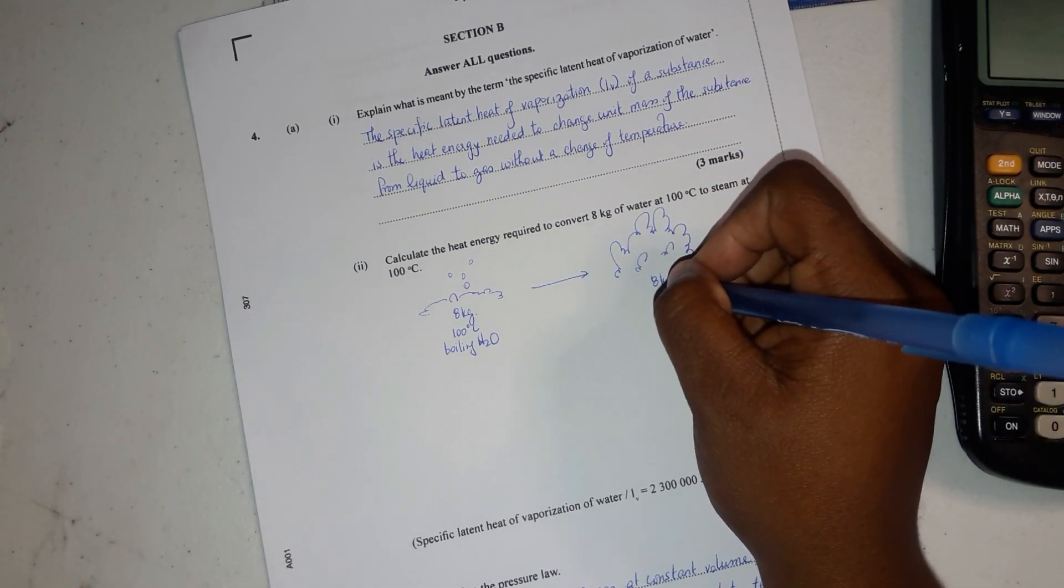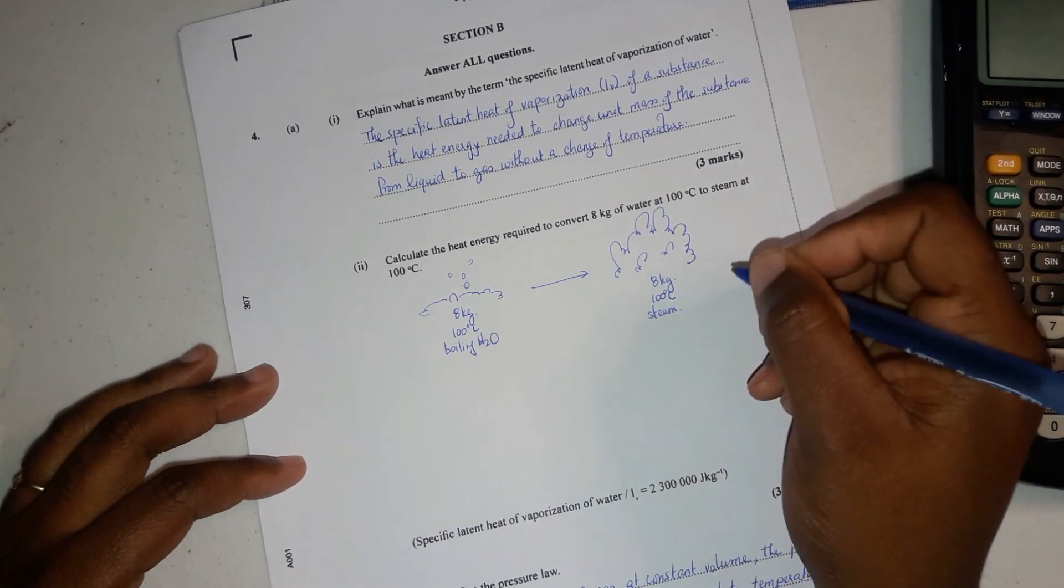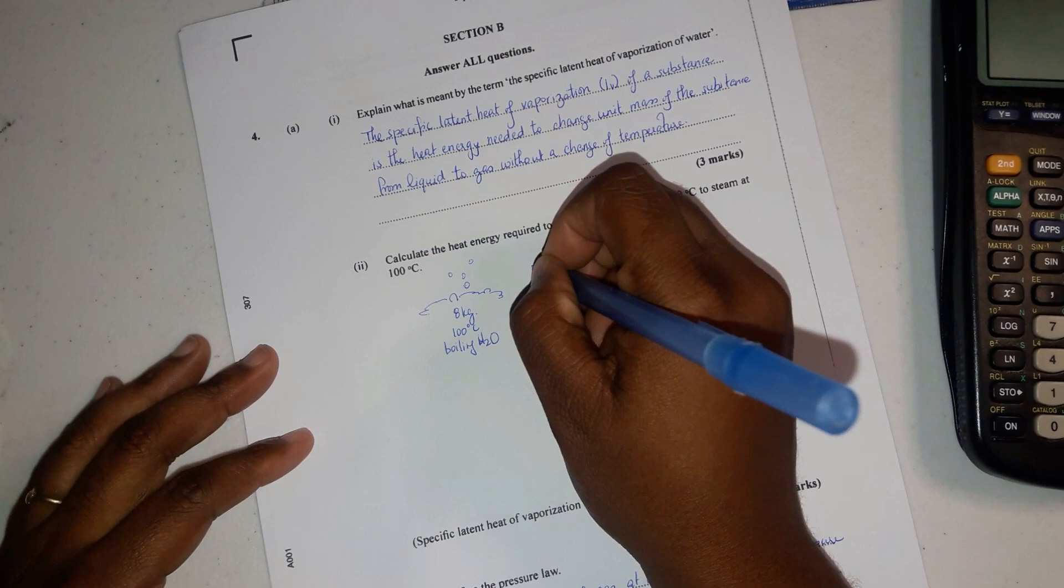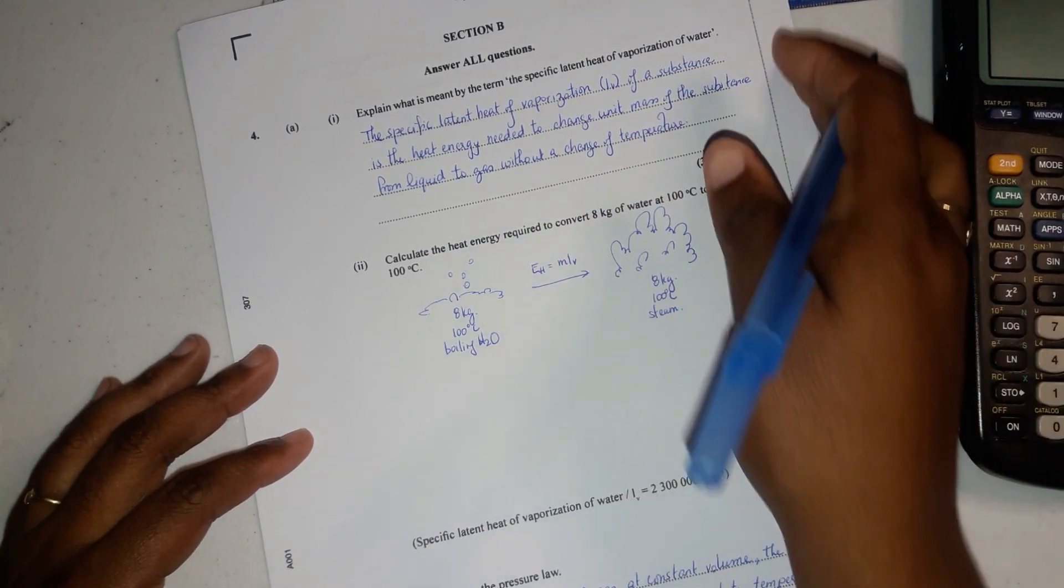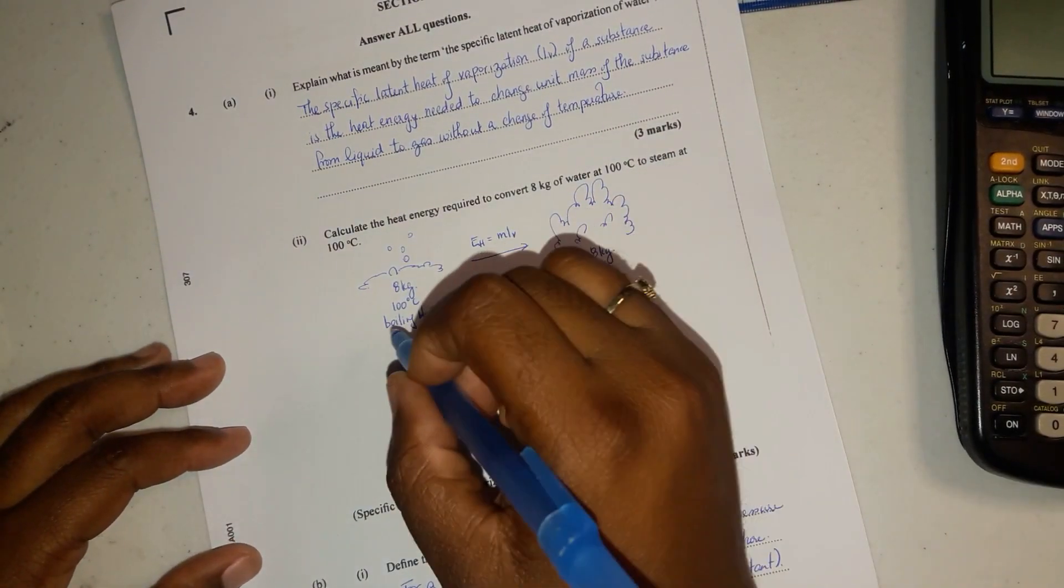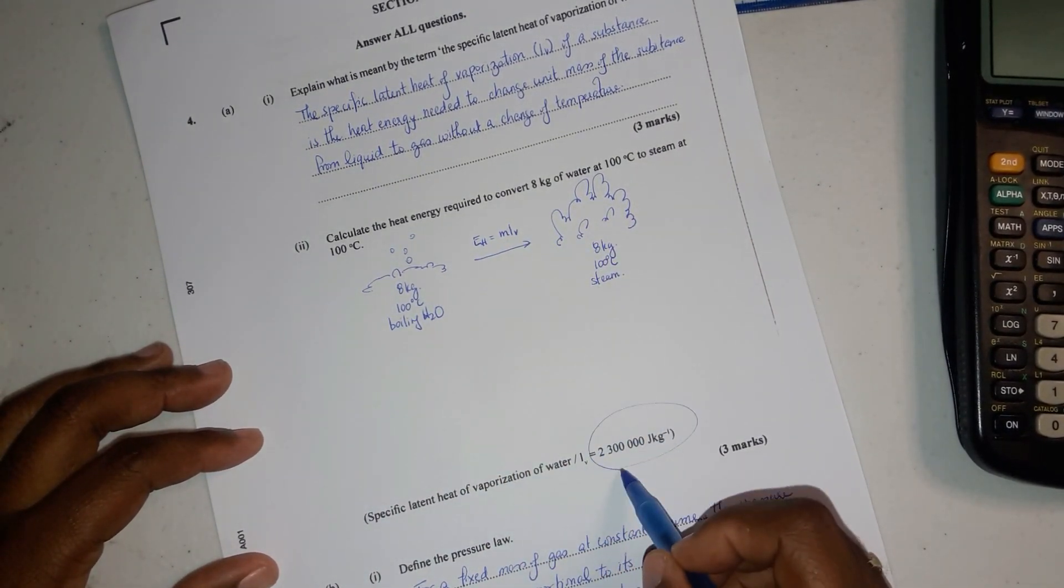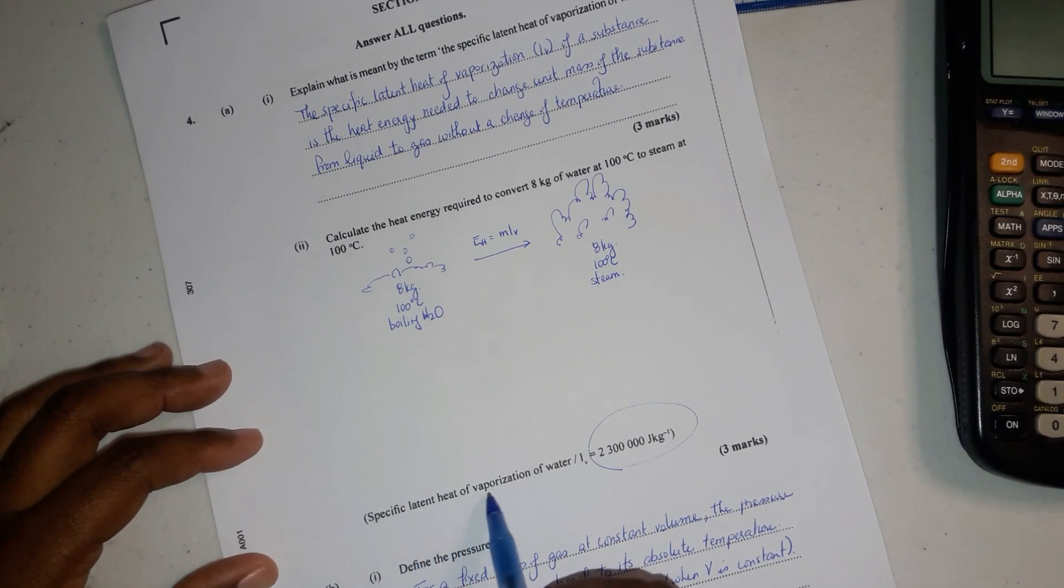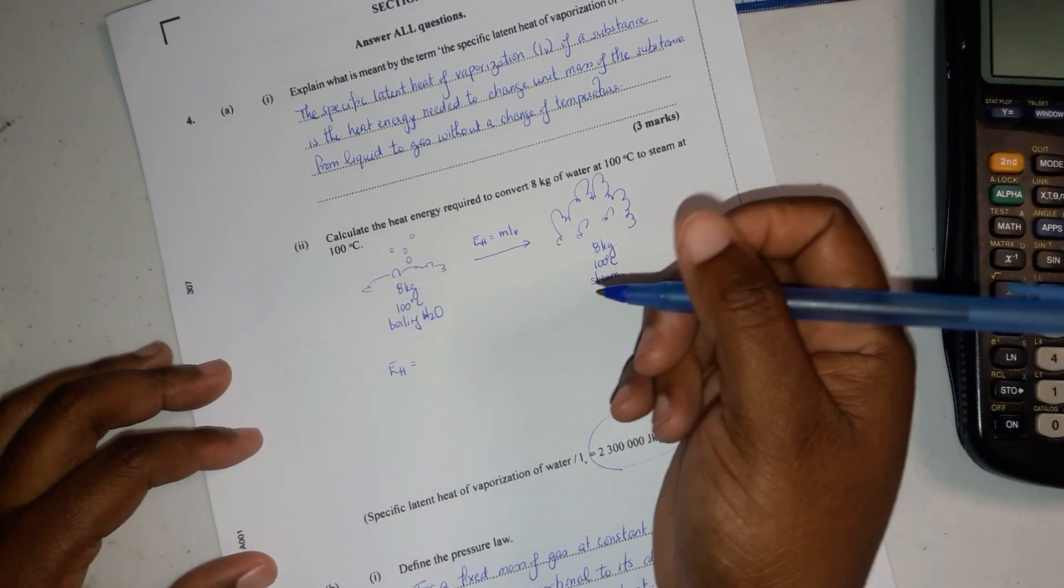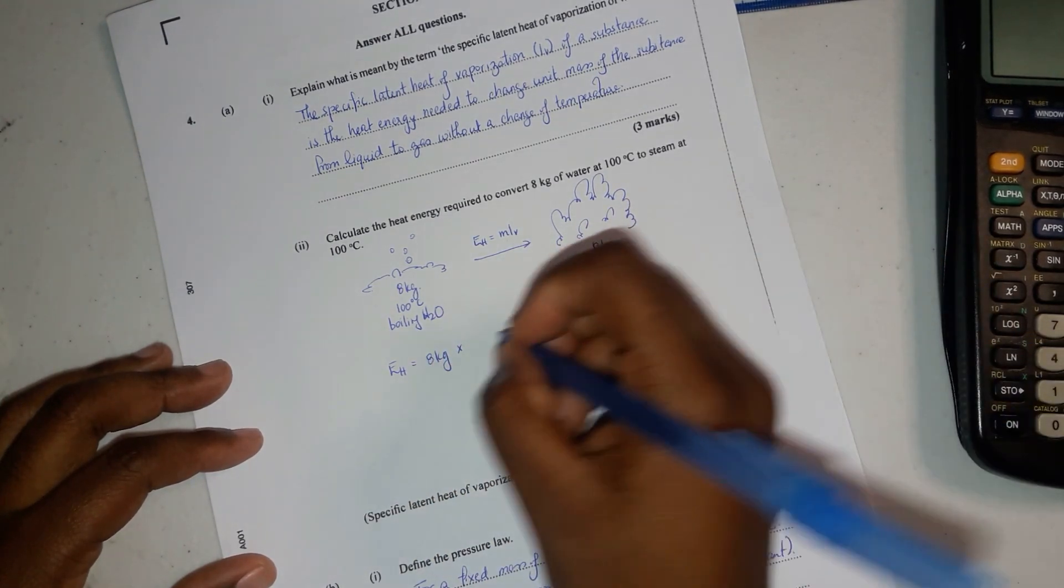Latent heat is what transpired here. There is no temperature change, so I'm going to put EH equals mLv. Calculate the heat required to convert that boiling water to steam. So we have the mass and we have Lv, it's given down here. This is the specific latent heat of vaporization of water. So EH, we're just substituting our values now. The mass is 8 kilograms and the latent heat of vaporization is 2,300,000 joules per kilogram.